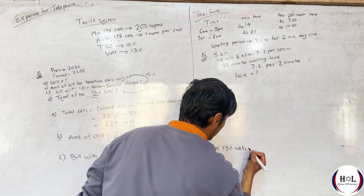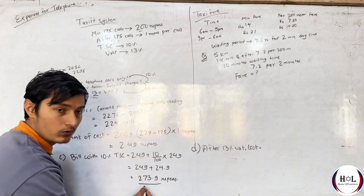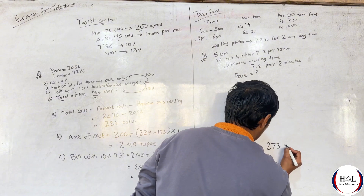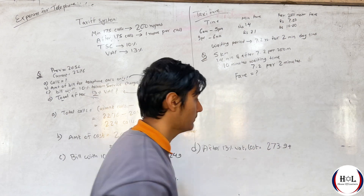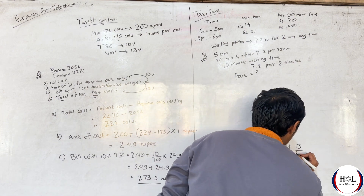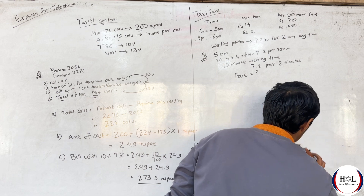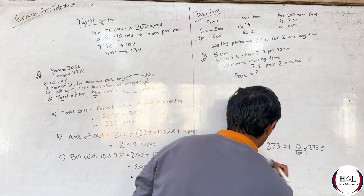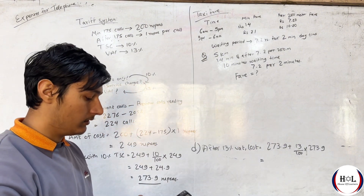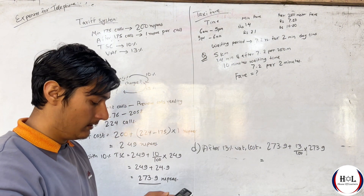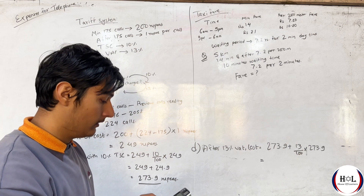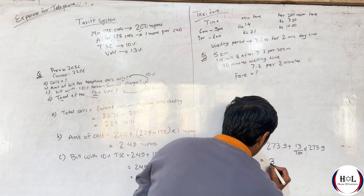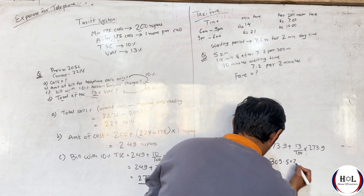Total after 13% TSC: 273.9. Zone number 13 upon 100 into 273.9. The answer is 309.507 rupees.